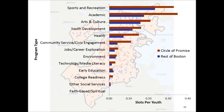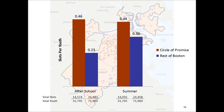Here is a comparison of slots per youth by program type compared between the Circle of Promise and the rest of Boston. Note that in almost every breakdown, there are more opportunities for youth within the Circle of Promise. Grouped in aggregate, the difference between the Circle of Promise and the rest of Boston is even more dramatic, particularly in afterschool opportunities. The Circle of Promise has less than half the youth population of the rest of Boston, but nearly the same number of slots. Therefore, there are double the opportunities per youth in afterschool.